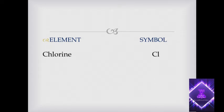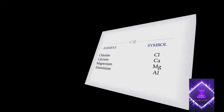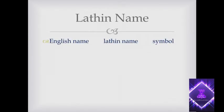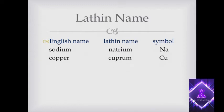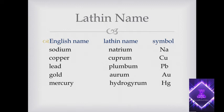Calcium — Ca, magnesium — Mg, aluminum — Al. Some elements have symbols derived from their Latin names rather than their English names: sodium — Na, copper (cuprum) — Cu, lead (plumbum) — Pb, gold (aurum) — Au, mercury (hydrargyrum) — Hg, iron (ferrum) — Fe.